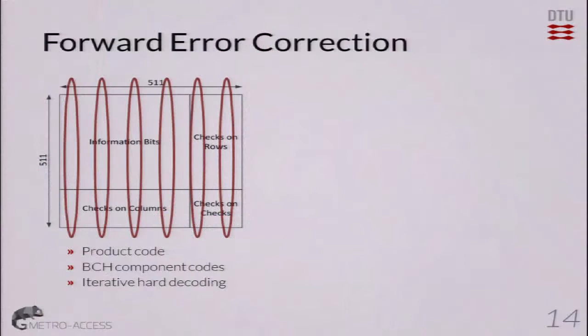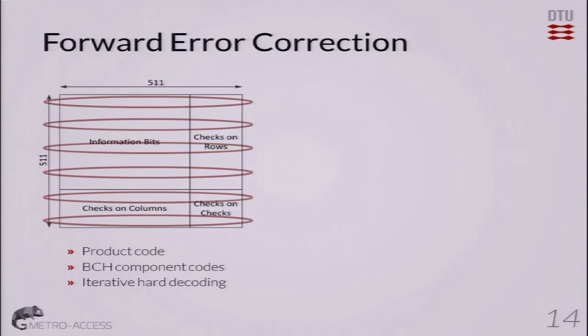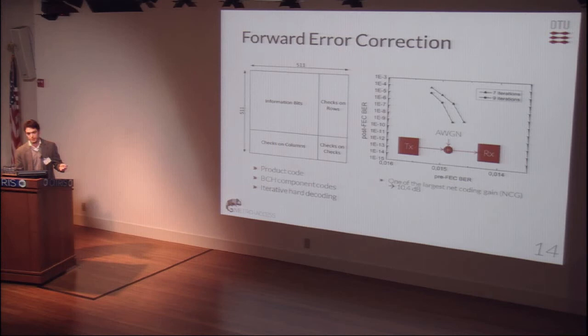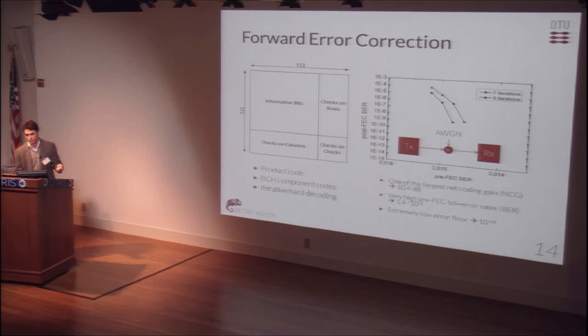The information was iteratively decoded through hard decisions — first rows, then columns, or the other way around — making one iteration. These are simulated results showing pre-FEC and post-FEC bit error rates. One of the benefits observed is the low number of iterations necessary to achieve error-free transmission. We achieved one of the largest net coding gains: 10.4 dBs, and one of the highest pre-FEC bit error rates tolerated — 1.4 × 10⁻² — that we were able to bring down to 10⁻⁴³, well below the new BER floor standard, which is considered to move from 10⁻¹⁵ to 10⁻¹⁷.